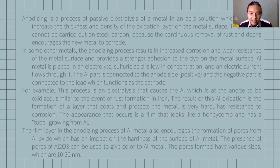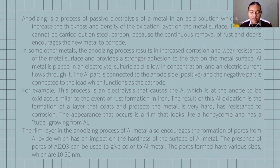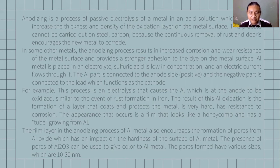The structure that occurs is a film that looks like a honeycomb and has tubes growing from aluminum. The film layer in the anodizing process of aluminum metal also involves the formation of pores from aluminum oxide, which has an impact on the hardness of the surface of aluminum metal.